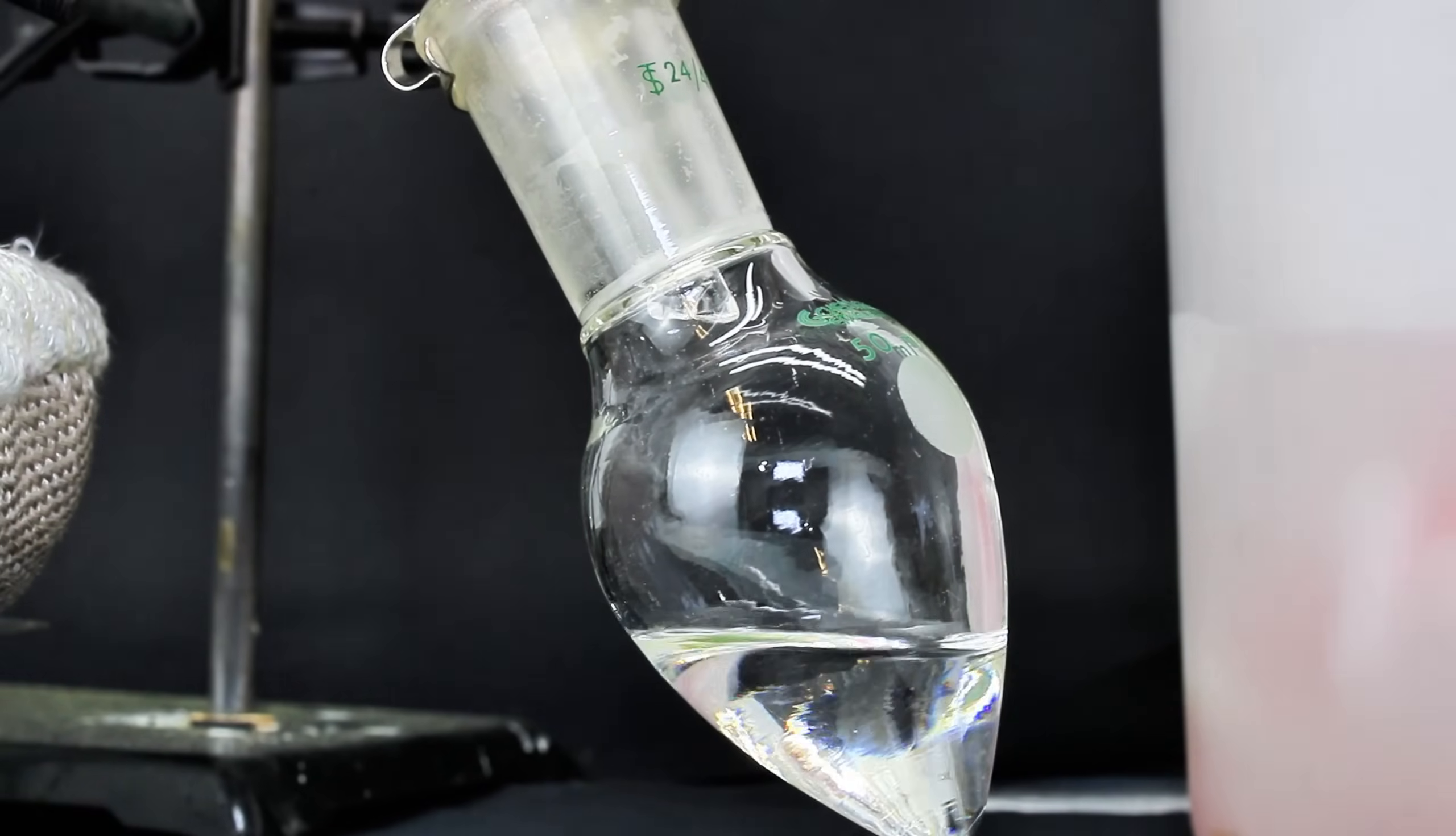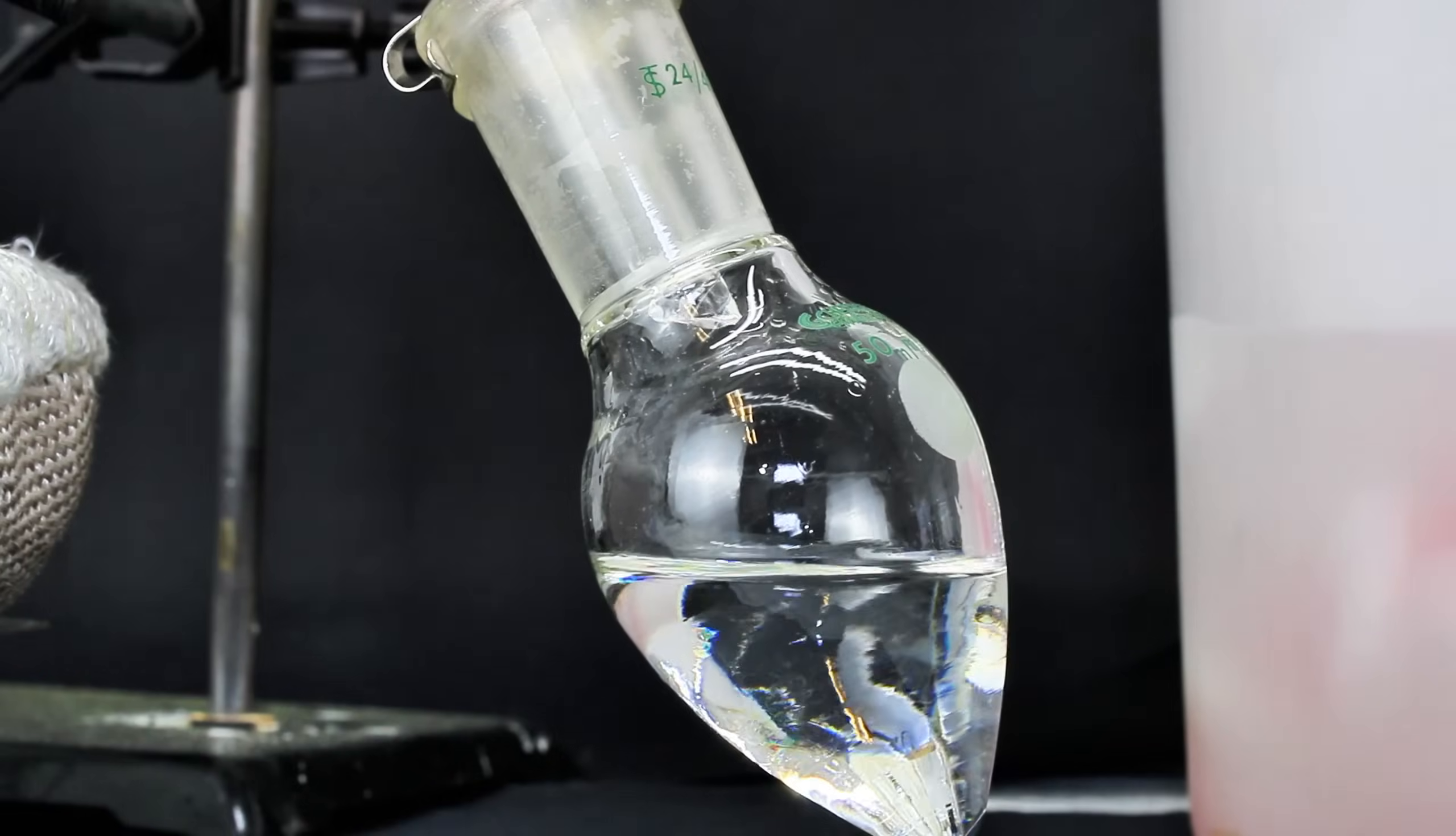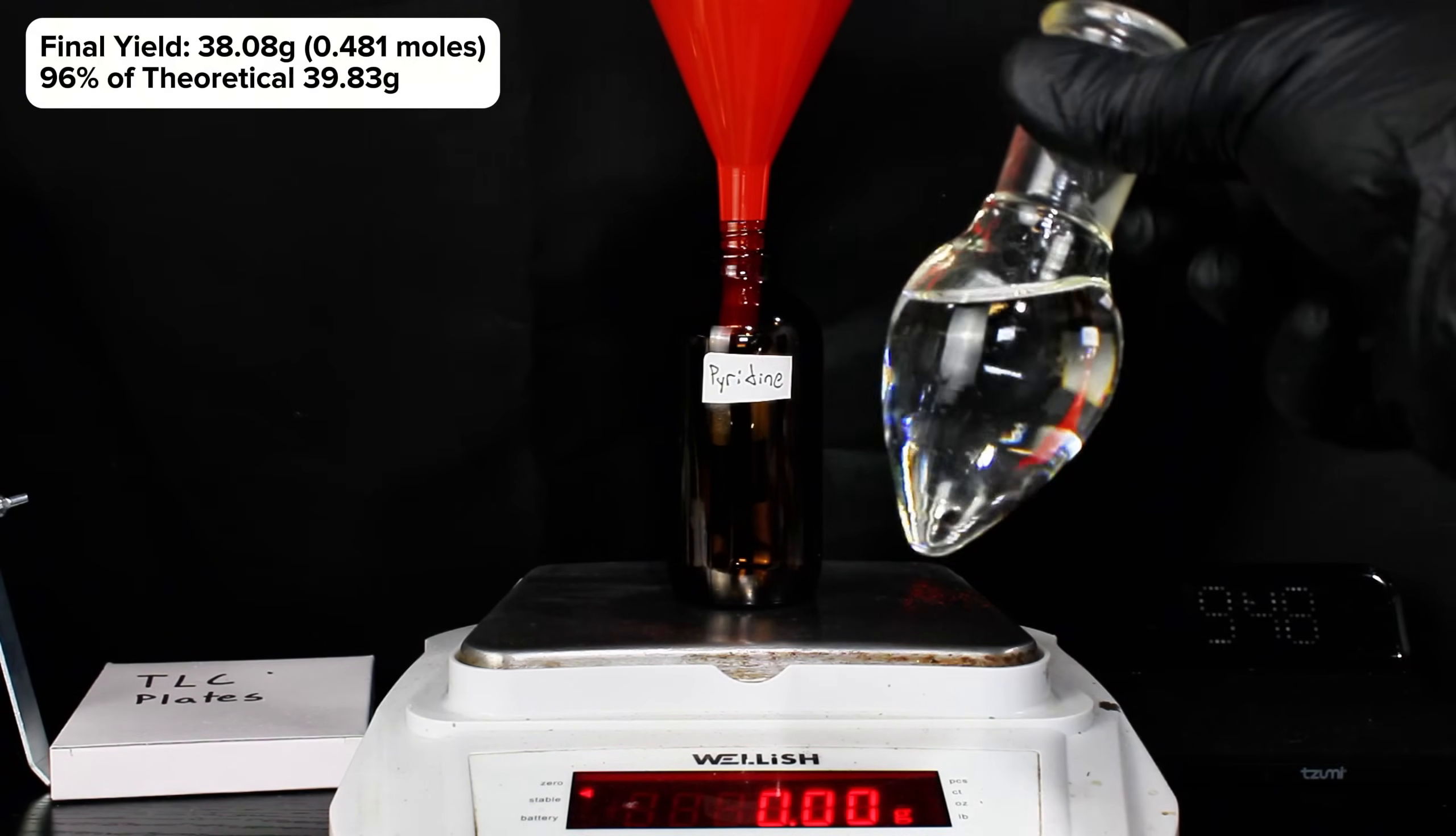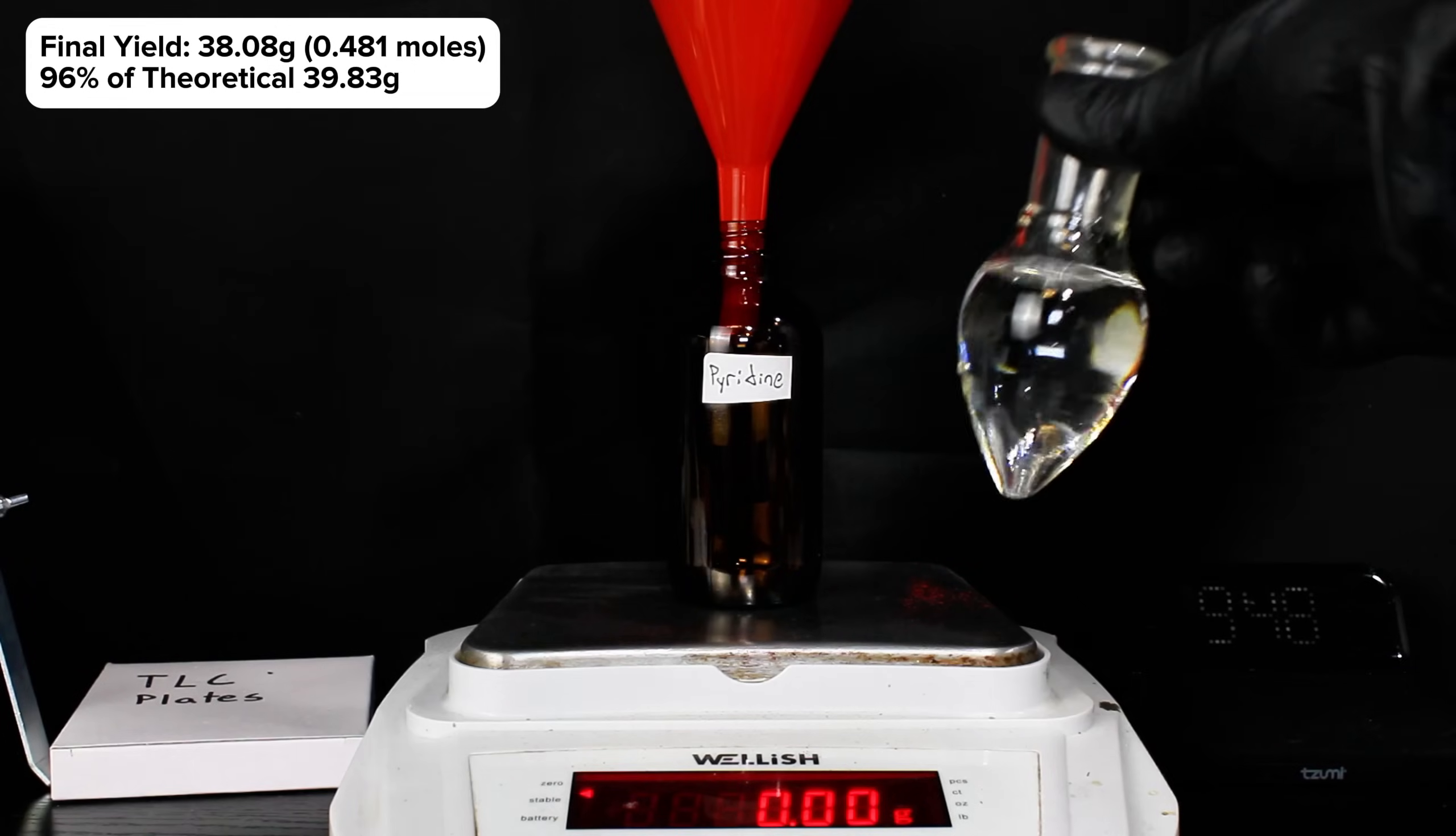Once the distillation was complete, I weighed out my pure pyridine for a final mass of 38.08 grams, representing a very high 96% yield. This number seems almost too high, and either this went perfectly, or I failed to dry the pyridine completely.